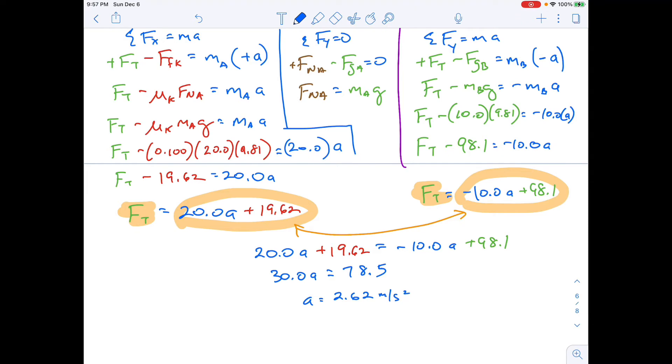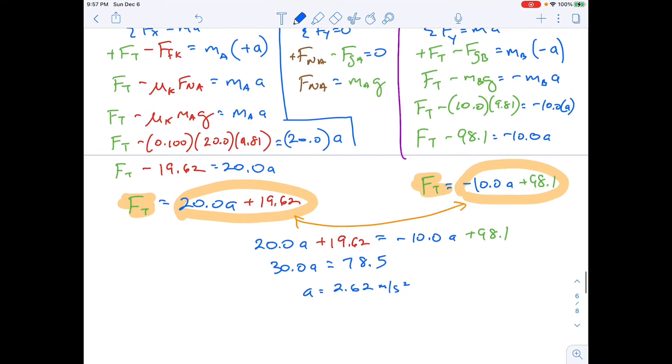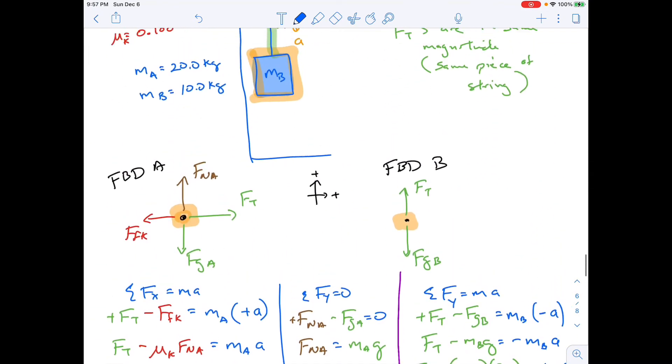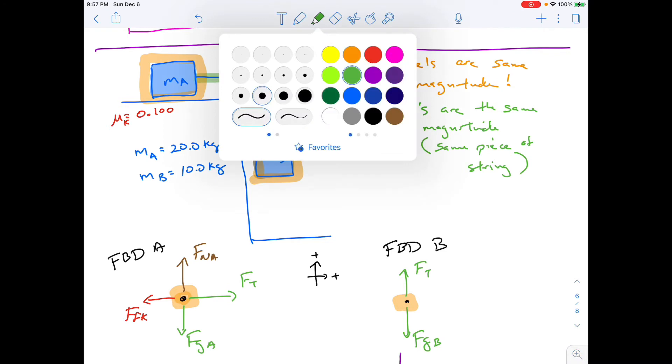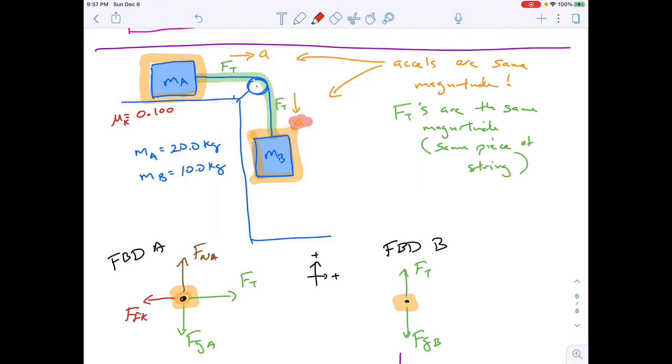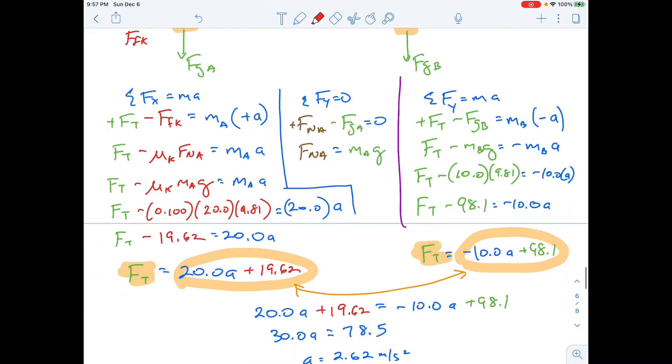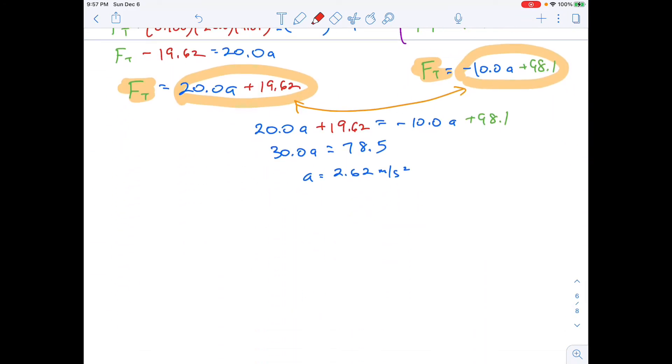And I get an acceleration of 2.62 meters per second squared. And so that acceleration is 2.62 meters per second squared. That's downward. That's going to be downward for block B. And that's going to be to the right for block A. It has to be.